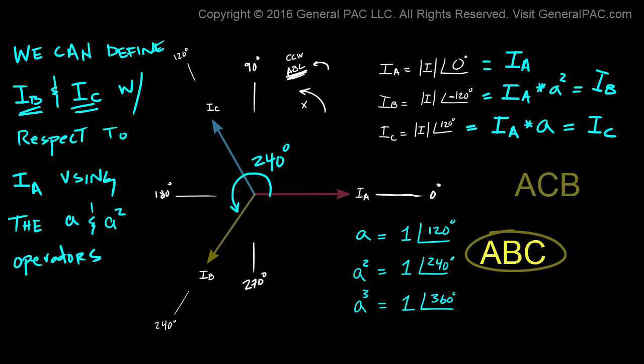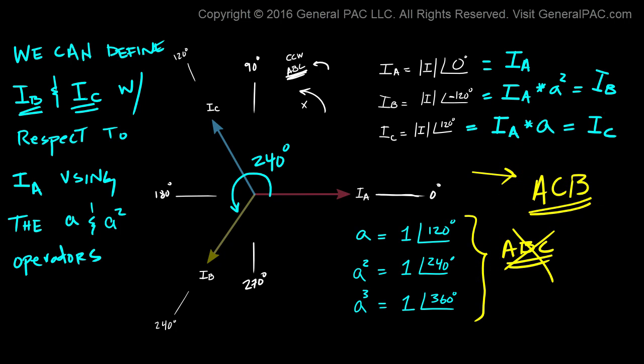But if you have an ACB phase sequence, these A operators are going to be different. So let's just go over that really quickly. Now we're not talking about ABC anymore. Now we're talking about ACB. What would we have to do with this phasor diagram? Well, to be an ACB phase sequence, we have to change that to IC, and then we have to change that to IB. Now this is an ACB phase sequence.